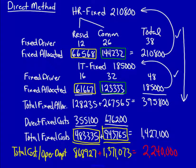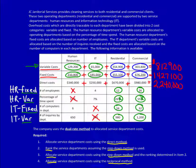The dual rate method does exactly the same thing as a single rate method — it allocates the service department costs to the operating departments. It simply does it after the separation of costs into their variable and fixed categories.